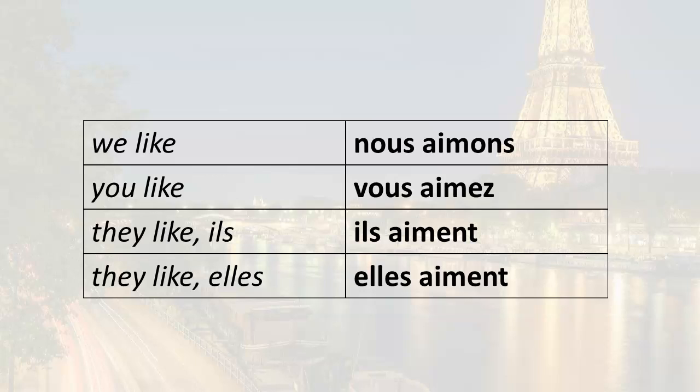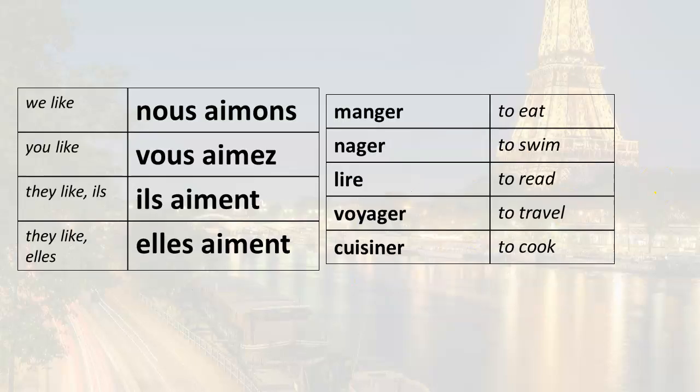So there we have our forms. Nous aimons. Vous aimez. Ils aiment. Elles aiment. Remember to associate the endings with the subject pronouns. And now the fun part. We put it together. You can say things like, nous aimons manger. We like to eat. You like to read. Vous aimez lire. They like to cook. Ils aiment cuisiner.